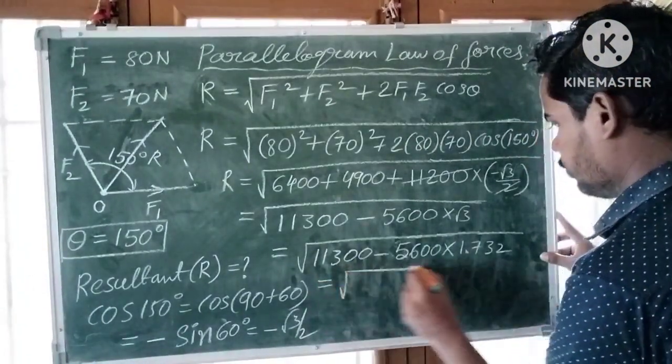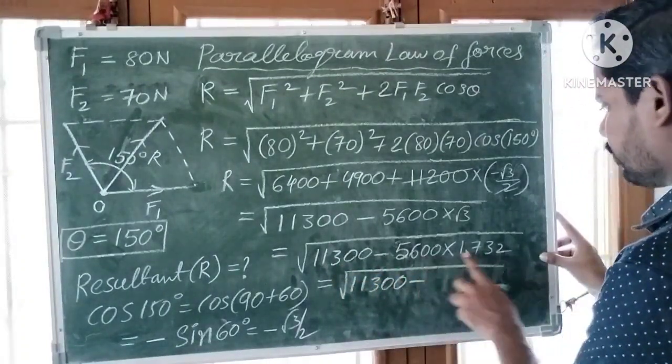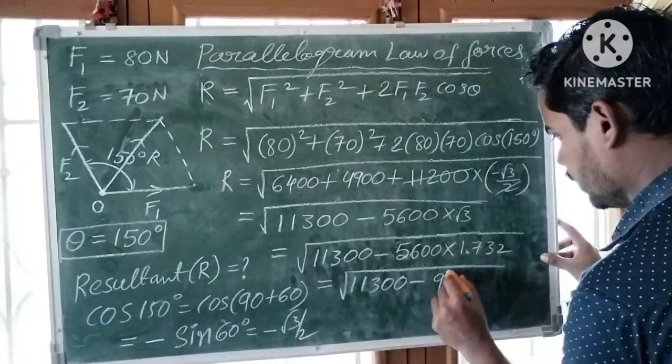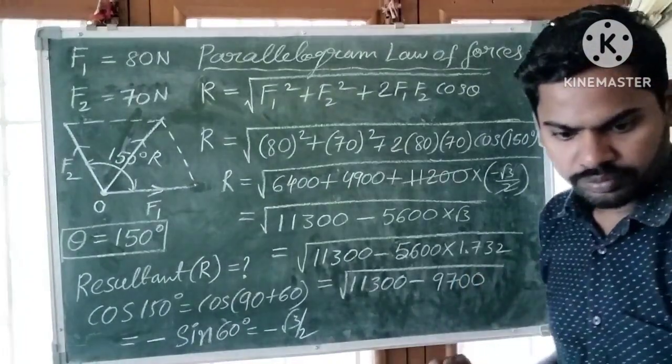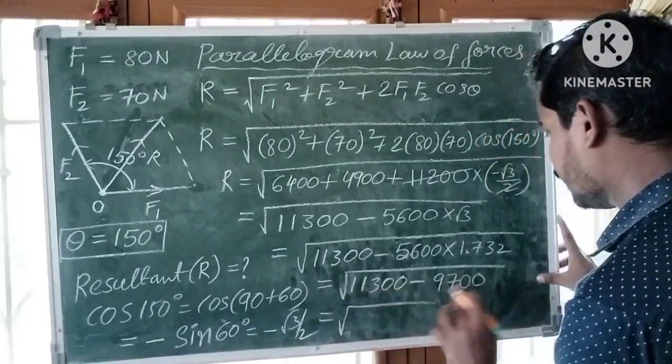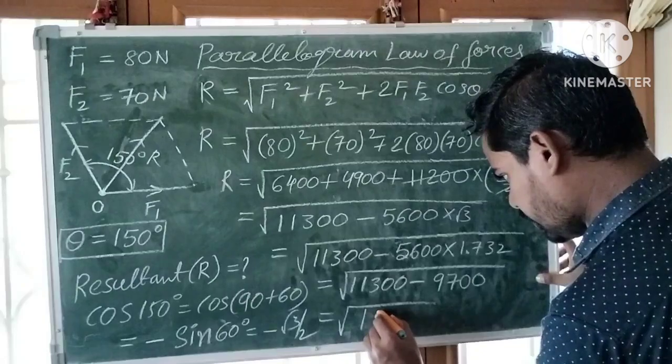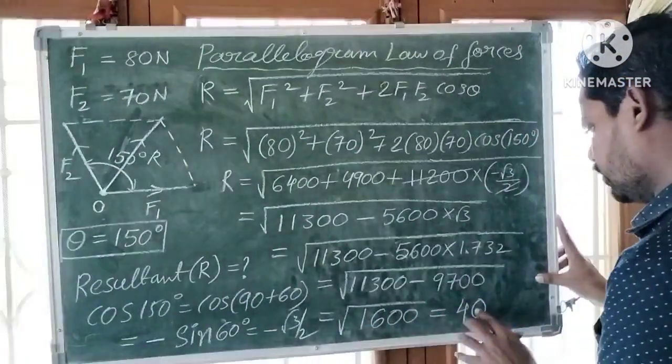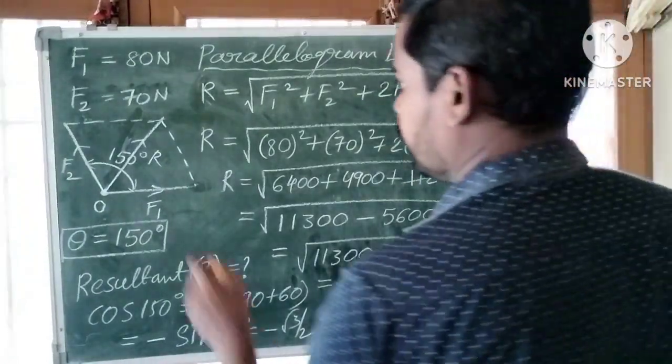Is equal to root over 11,300 minus 9,700. You will get root of 1,600, which is 40. Therefore resultant R is equal to 40 Newtons.